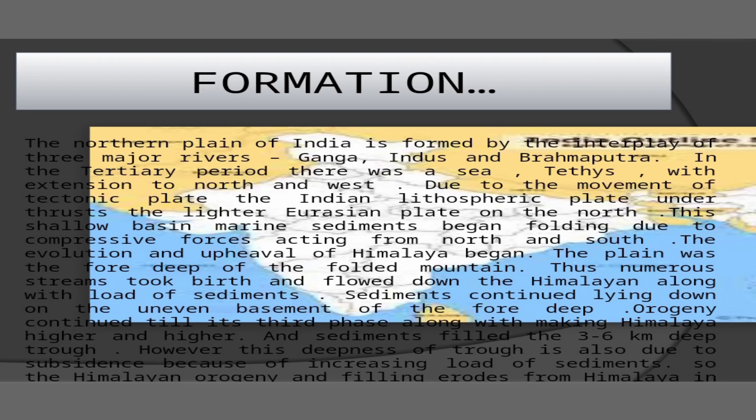Glaciated plains: the great glaciated plains of central North America and western Europe were plains before they were glaciated. However, the glaciers superimposed a new topography on the old. Drumlins, eskers, moraines of different types, lakes, basins, marshes, and lacustrine plains dominate the present relief. Important changes have been made in the pre-glacial drainage.